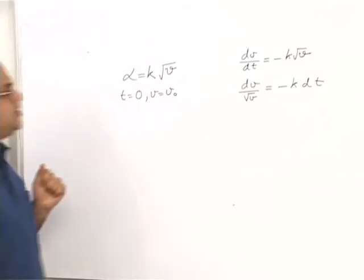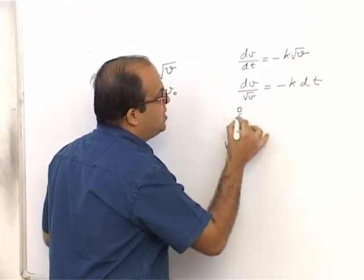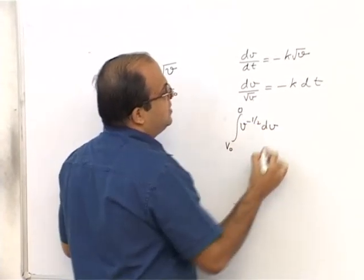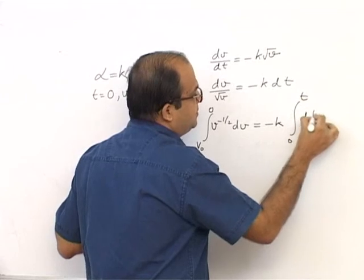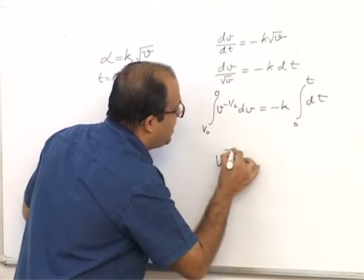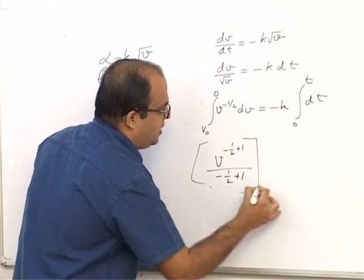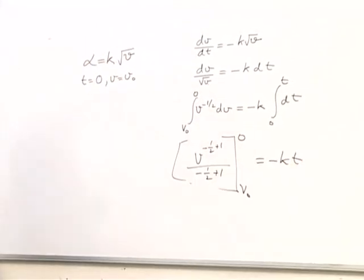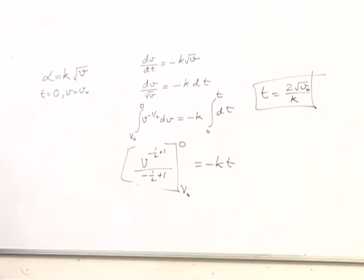We can write this as dv by root v is equal to minus k dt. Now we can integrate this equation. So velocity changing from v0 to 0. v to the power minus half dv. Minus k is a constant. Time is changing from 0 to t. Now we can integrate this function. The power increases by 1. So we get v to the power minus half plus 1, divide by minus half plus 1. And this is from v0 to 0. And this becomes minus kt. Now this is root v. This is half. So it becomes 2 root v. So time is 2 root v0 by k.